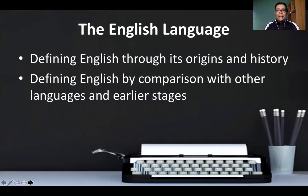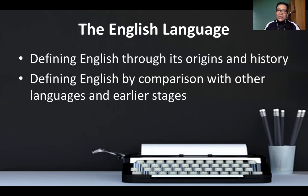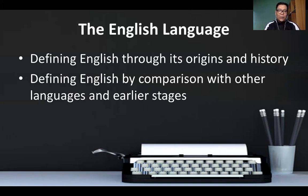There are two ways to define the English language: first, by defining it through its origins and history, and second, by looking at a comparison with other languages. We can also look at the distinction between the stages of the evolution of English and the evolution of other languages, as well as the English language's own stages — from before the Old English period, to Old English, to Middle English, up to Modern English.